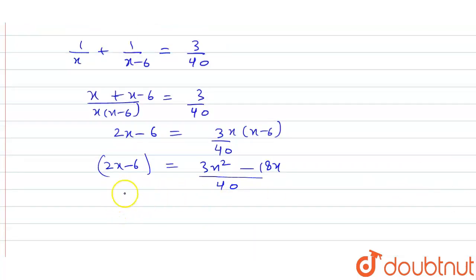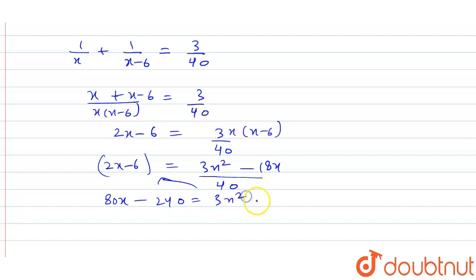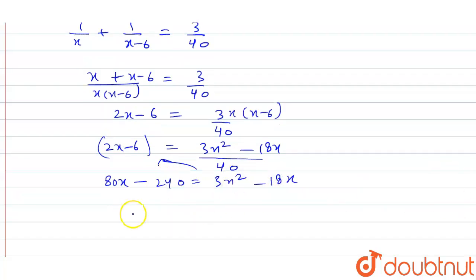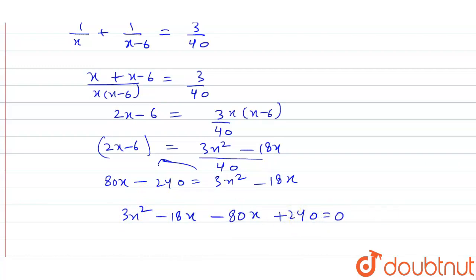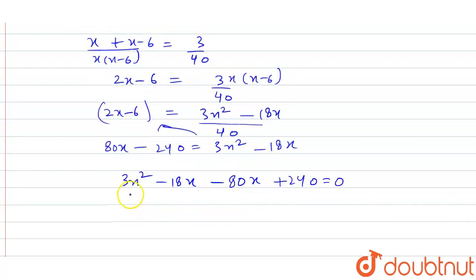We will multiply both sides by 40 on the LHS, giving 40 into (2x minus 6), that is 80x minus 240, is equal to 3x squared minus 18x. Taking all terms to the right-hand side: 3x squared minus 18x minus 80x plus 240 equals 0.